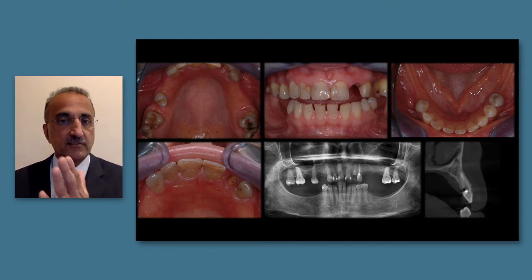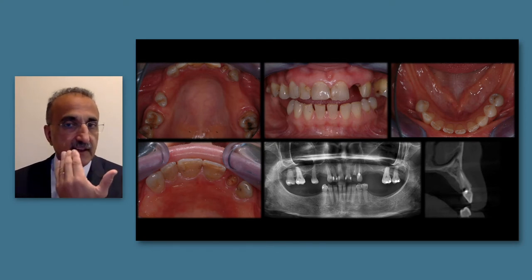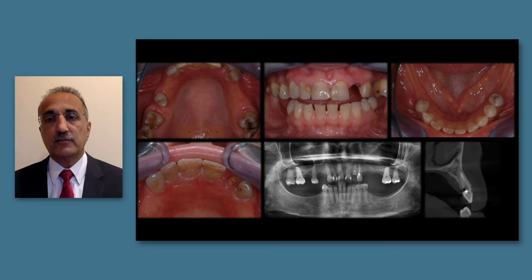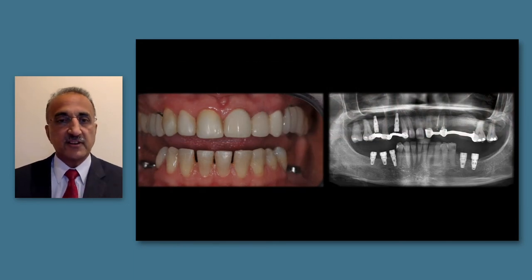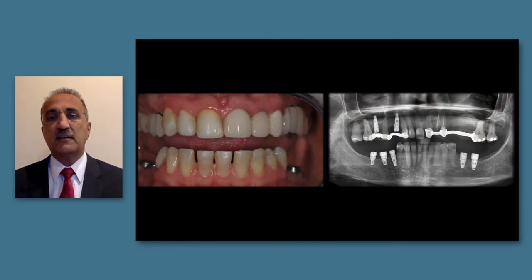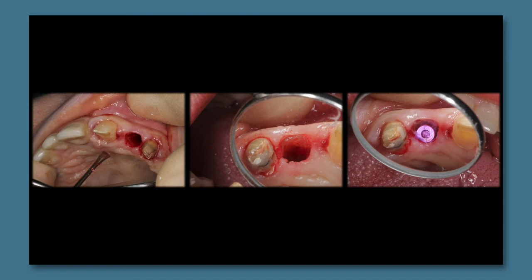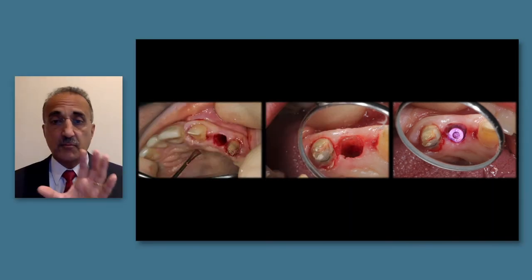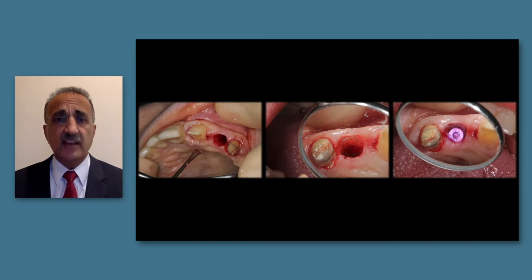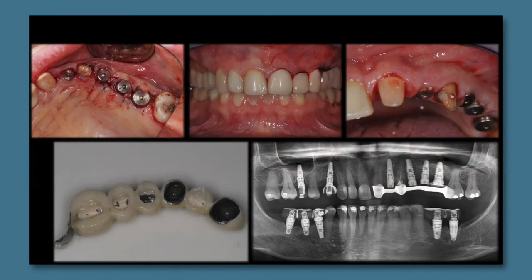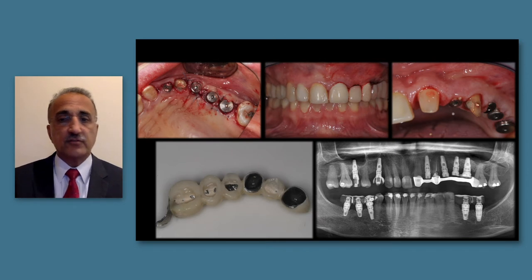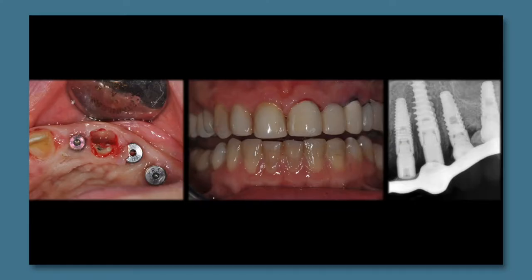With the canine supporting that alveolus, losing it and the lateral would create a massive defect very difficult to manage. We provisionalized the case using the teeth we could keep, retained the canine short-term while placing implants, performed sinus grafting and ridge augmentation. For the anterior teeth, a partial extraction therapy approach with a socket shield was used, placing an implant in the lateral incisor position and implants in the posterior maxilla. The provisional restoration was maintained supported by the canine while progressing.